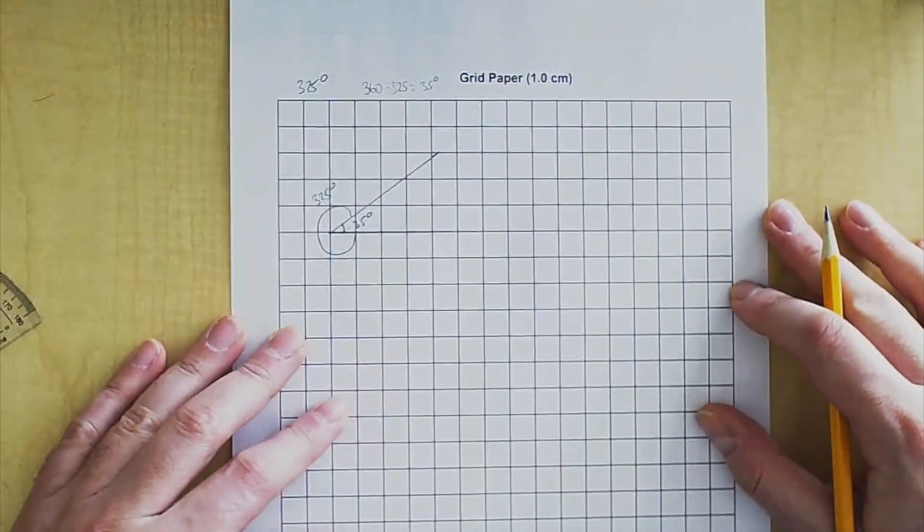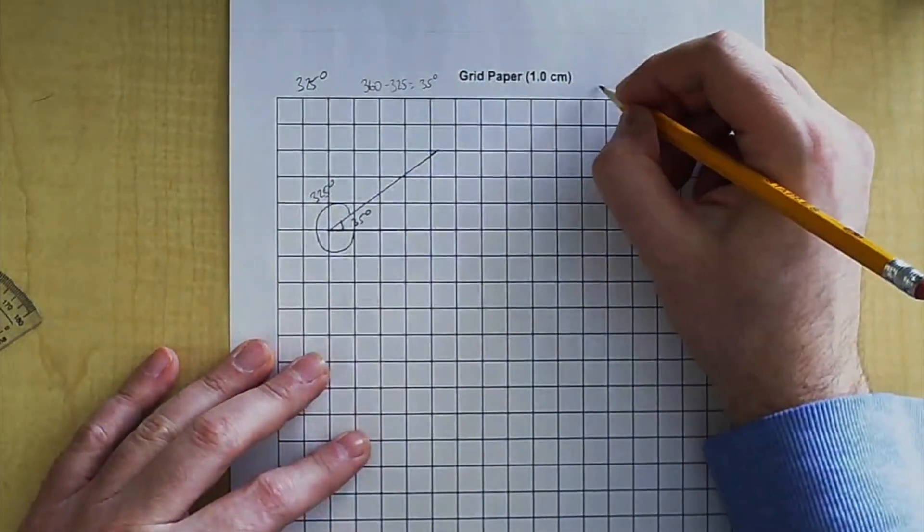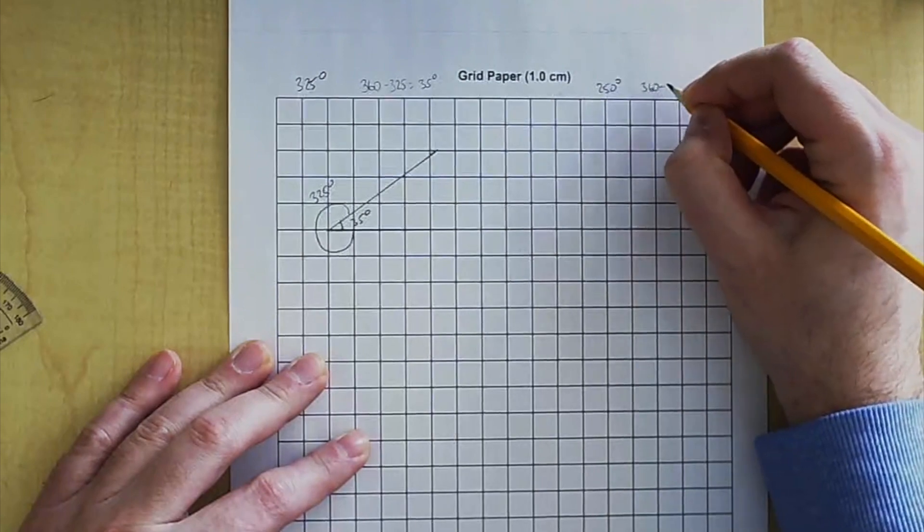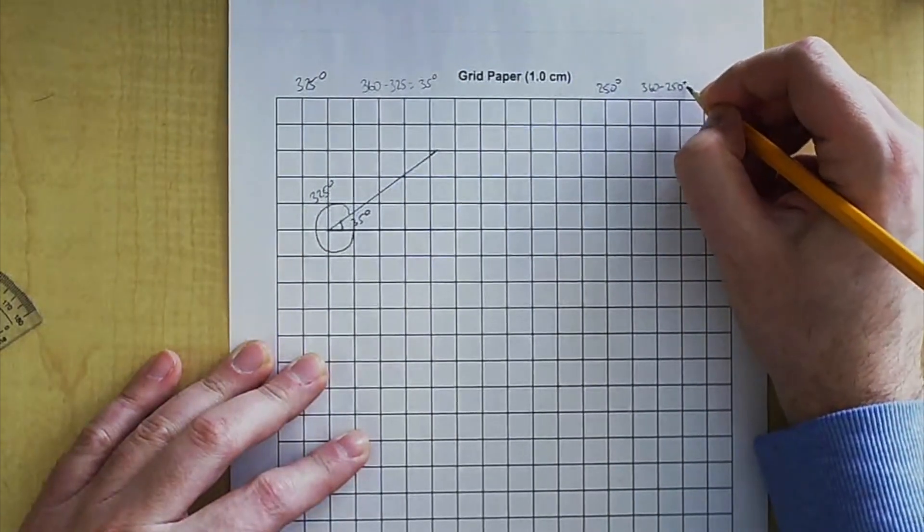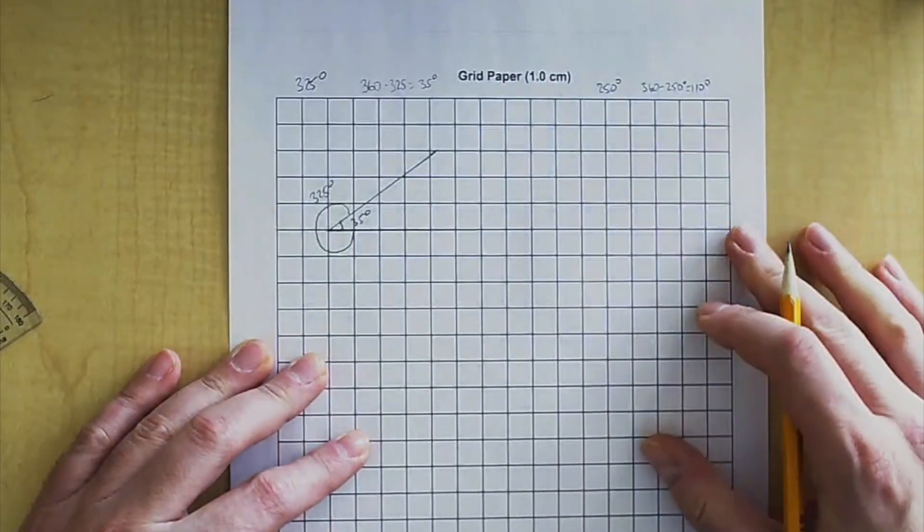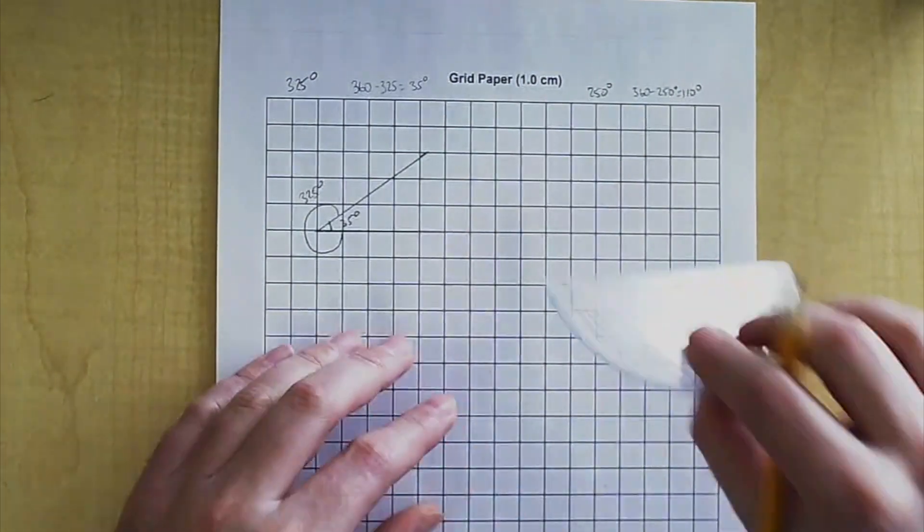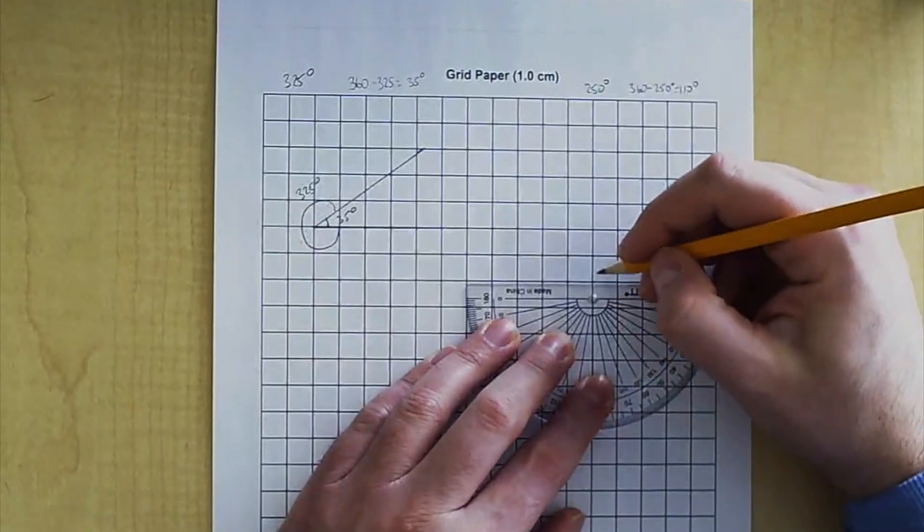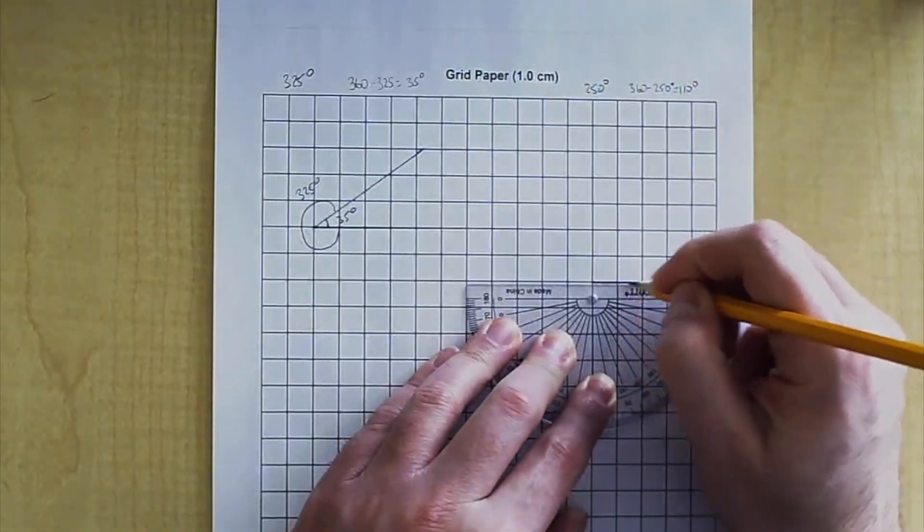That's how you would draw that one. The next one is 250 degrees. You would take 360 minus 250, that equals 110. Step one, draw the line at the bottom, like this.